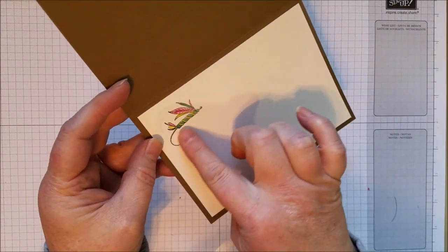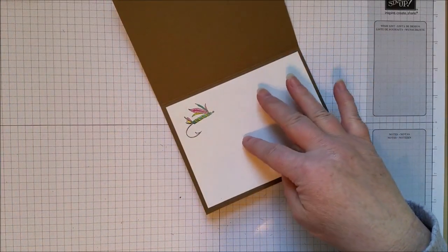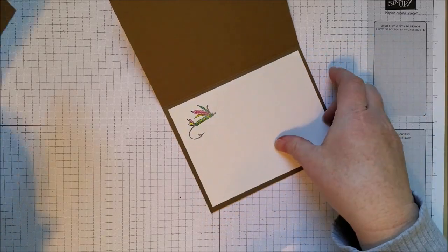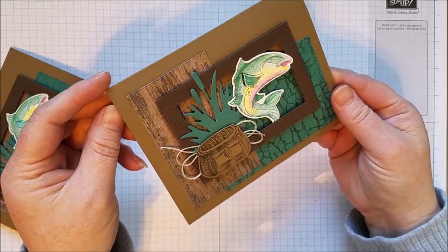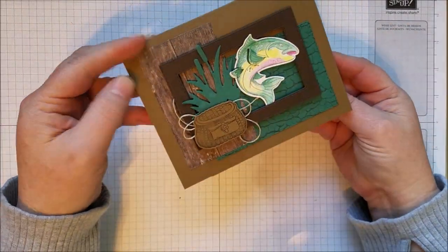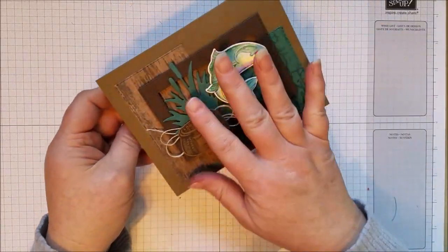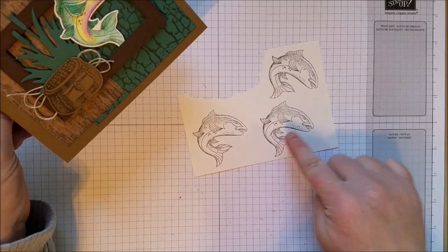On the inside I put a little fly. I wanted to leave the inside blank on some of these because I'm not sure what I want to use it for. It would be great for a retirement card or just a thinking of you. I did make one that says you're the best catch ever. Maybe I'll give that to my husband. Anyway, so this is the card we're going to work on here and I want to focus on coloring this fish.